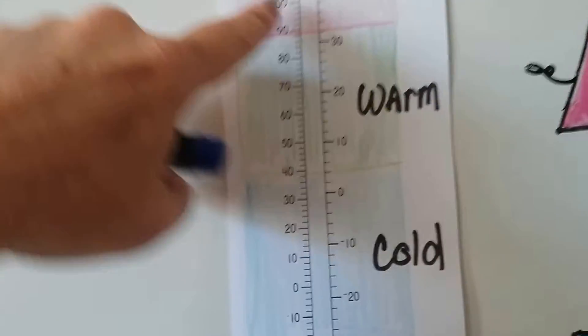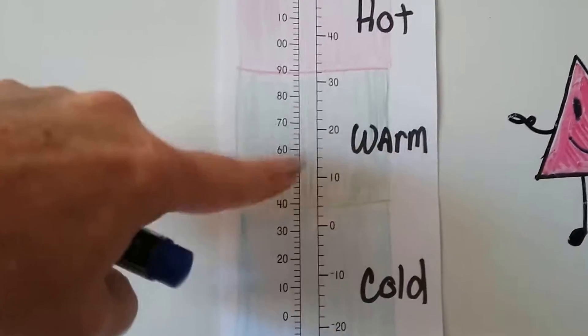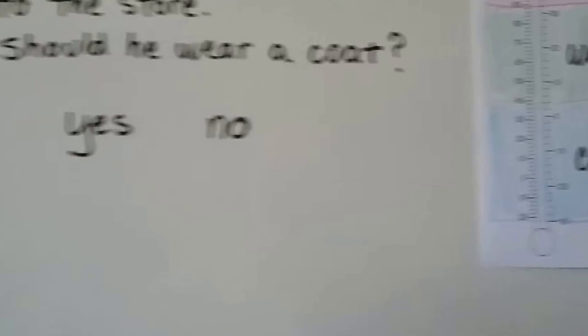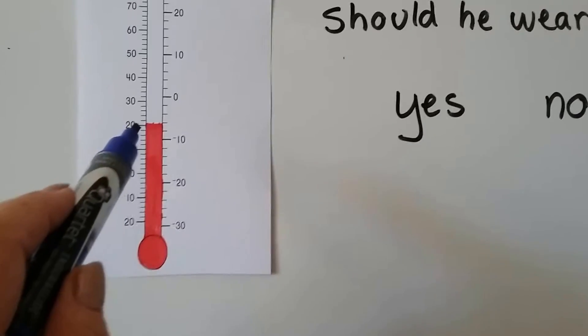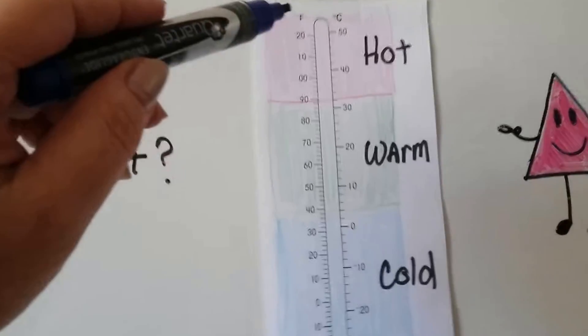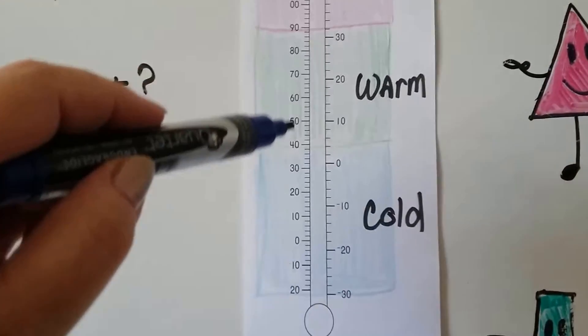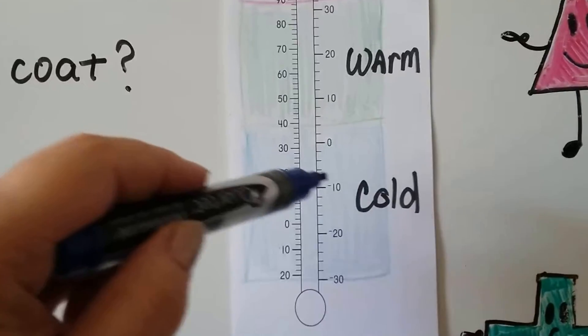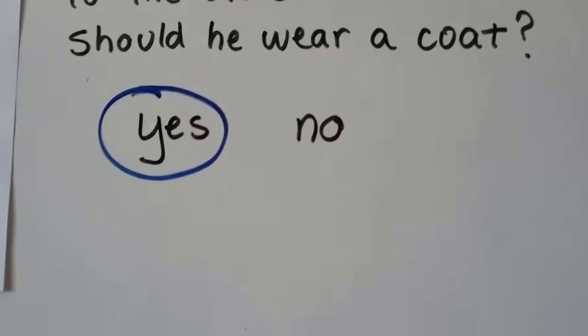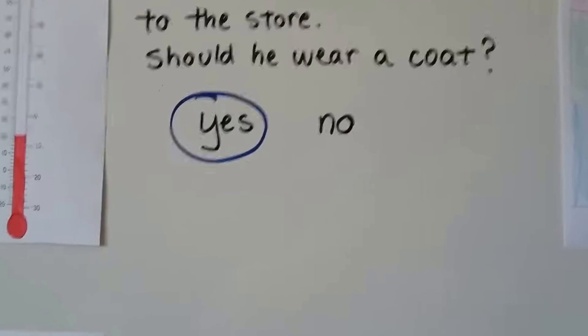So we know that this is the hot area, this is the warm area, and this is the cold area. And his thermometer says it's 20 degrees Fahrenheit. So here's the Fahrenheit side. We look for the 20. Ooh, that's in the cold section, isn't it? So yes, he should wear a coat, shouldn't he? He doesn't want to freeze, right?